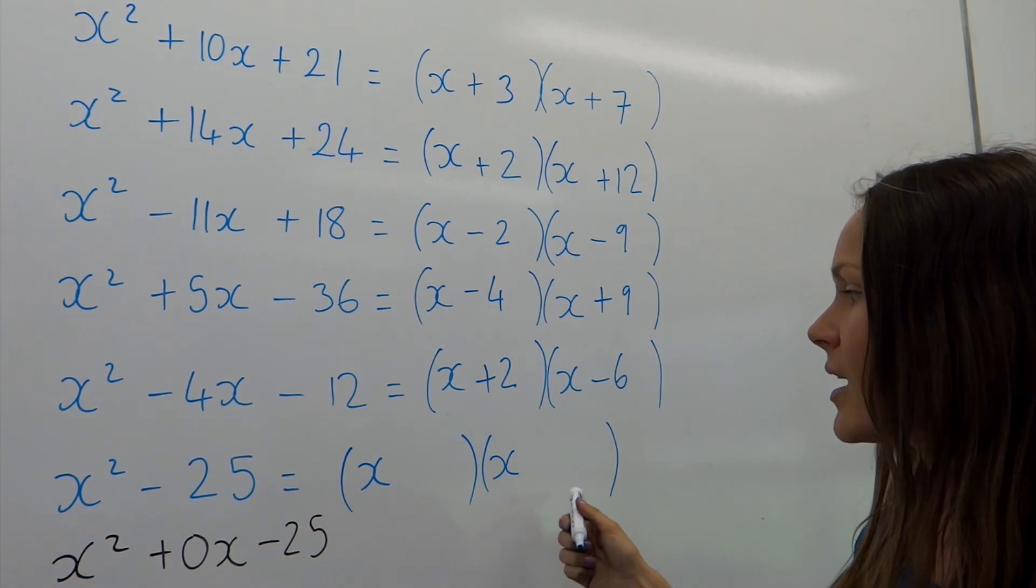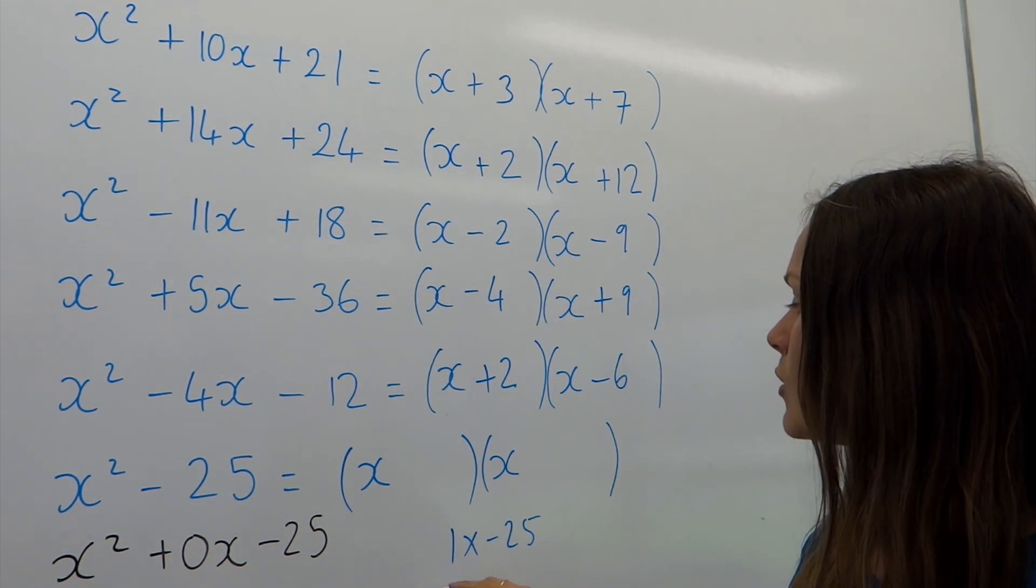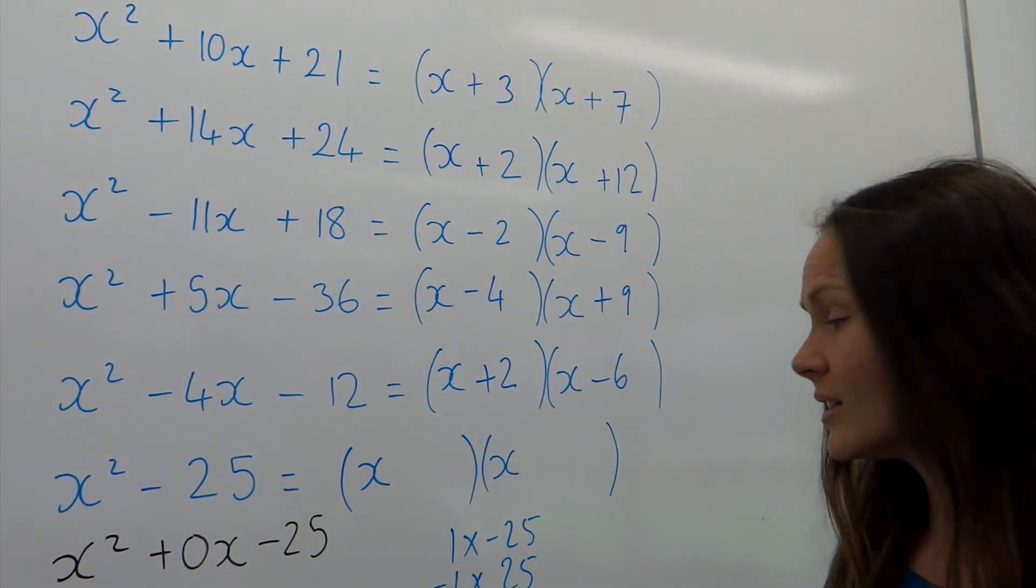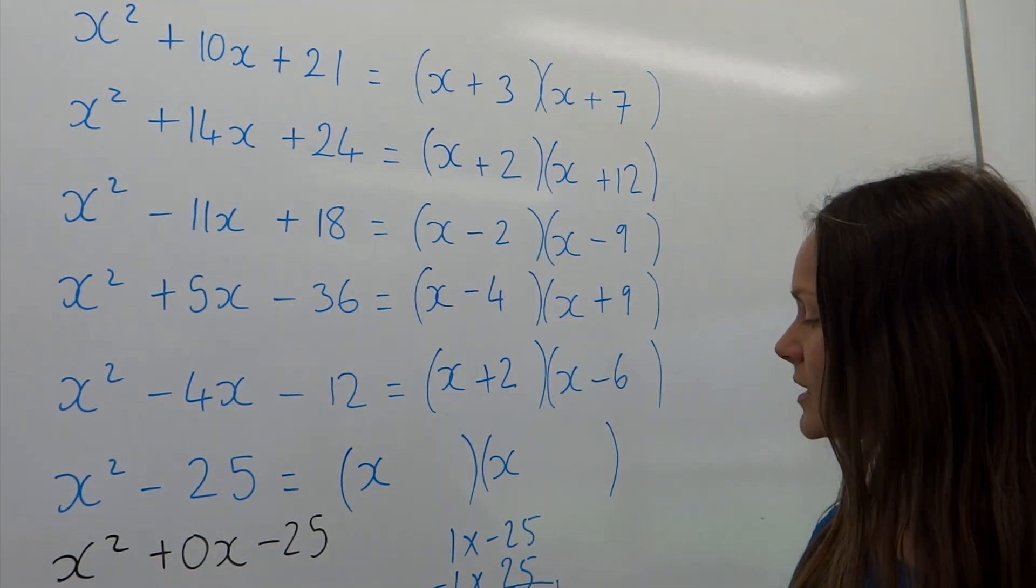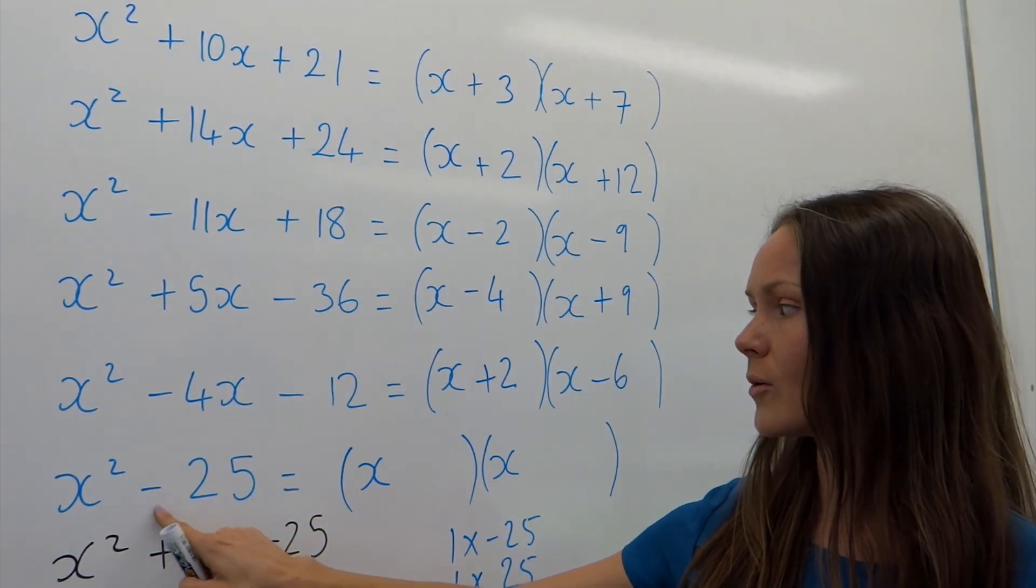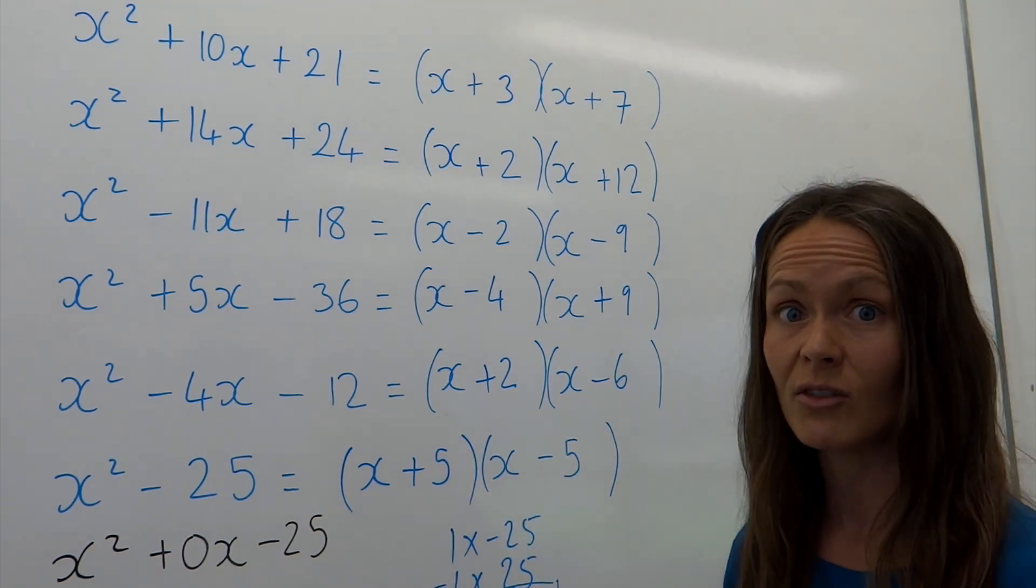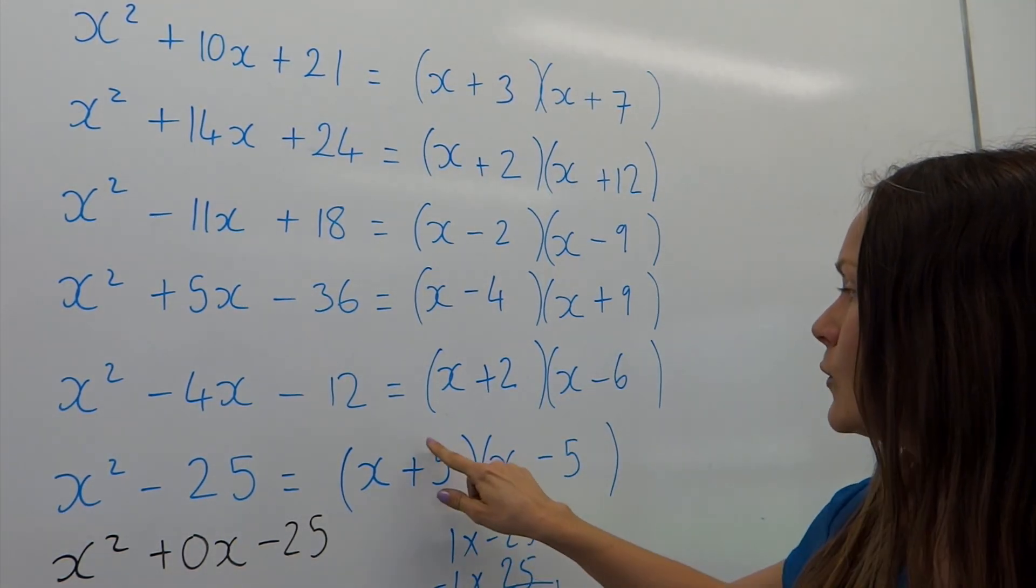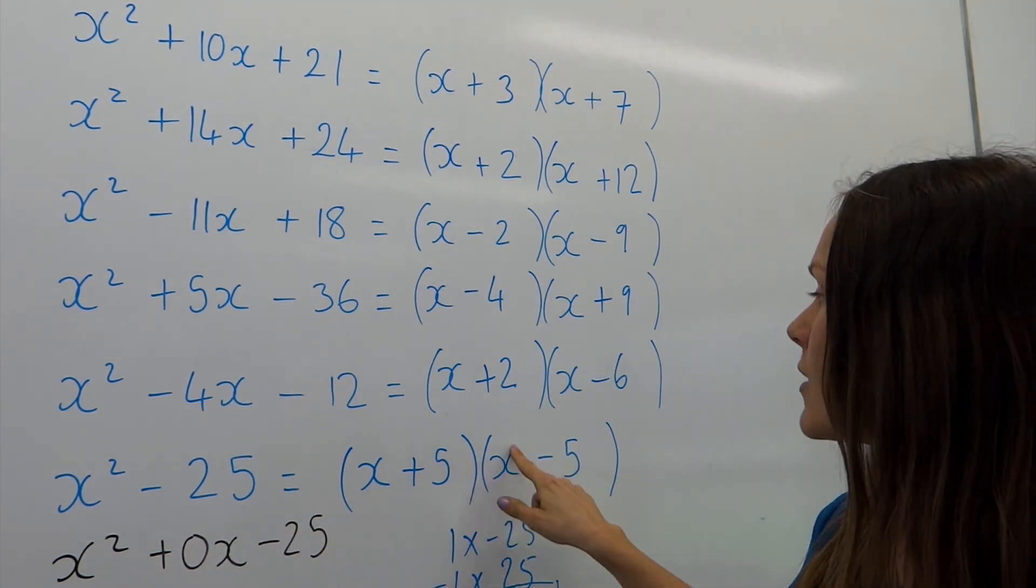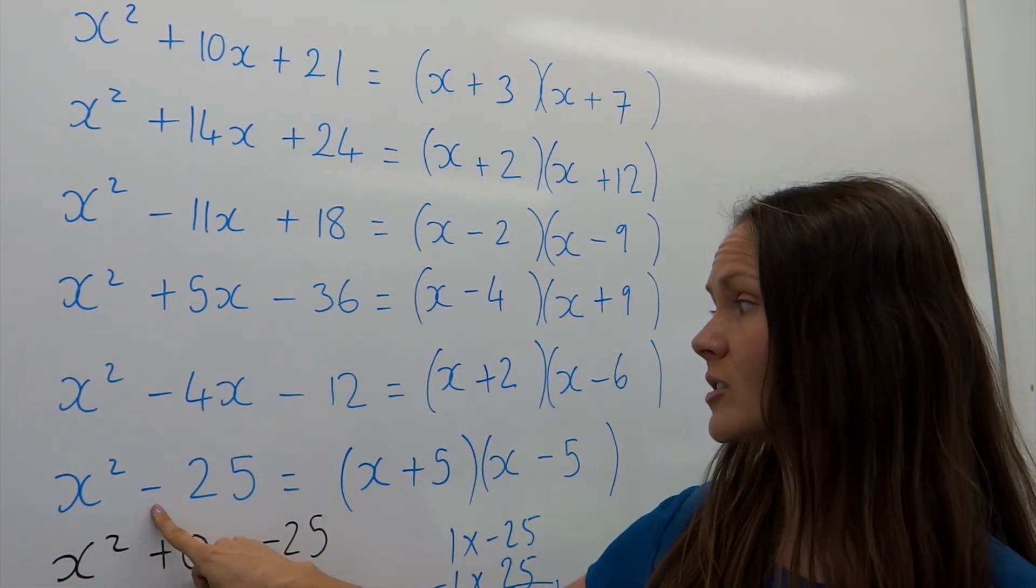So in this one, the numbers multiply to give negative 25. So 1 times minus 25, or minus 1 times 25, or 5 times minus 5. Well, it's obviously going to be the last one, because if I add these together, they give me 0, which is why there's no x term. So it's plus 5, minus 5, or minus 5, plus 5. It doesn't matter which way around you put them. So you've got your x squared, your 5 times minus 5 to get the minus 25, and then you've got your 5x and minus 5x, which cancel each other out. So it's 0x. So there's no x term.